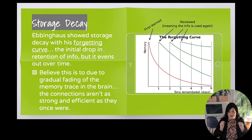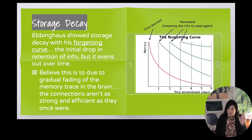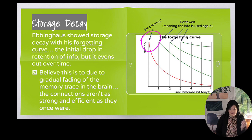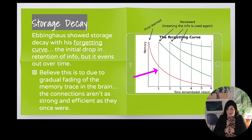Ebbinghaus showed us this with his forgetting curve. What he showed was an initial large drop in retention — the storing of information — but then it kind of evens out over time. This is the typical forgetting curve for newly learned information. If day zero is when you first learned it at 100%, that means you were properly encoding it and putting it into your long-term memory. After one day, you have a quick drop of forgetting, and tomorrow you'll have your most significant amount of storage decay.